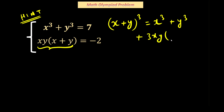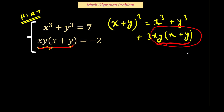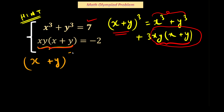... plus 3xy(x + y). This is why xy(x + y) is important — we can directly substitute this whole portion with -2. And one more advantage is that x³ + y³ is also given as 7. So it means I can find the value of (x + y)³. So (x + y)³ = x³ + y³, which equals 7.